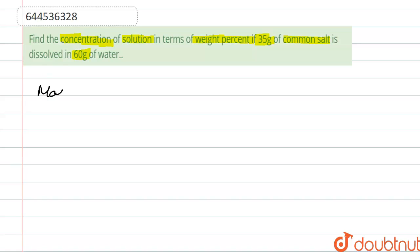Here, the mass of solute, that is the mass of common salt, is given as 35 grams, and it is dissolved in 60 grams of water. The mass of solvent is also given as 60 grams.